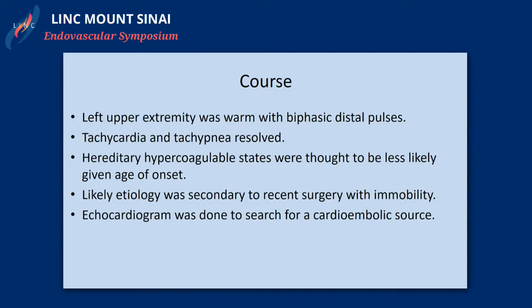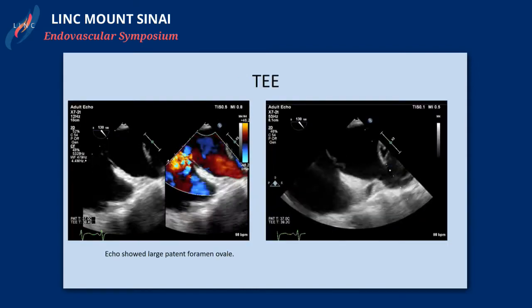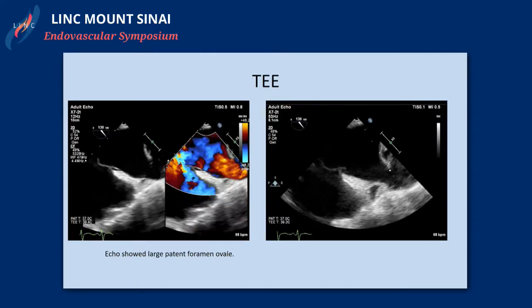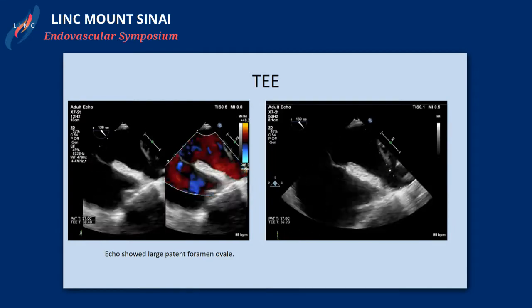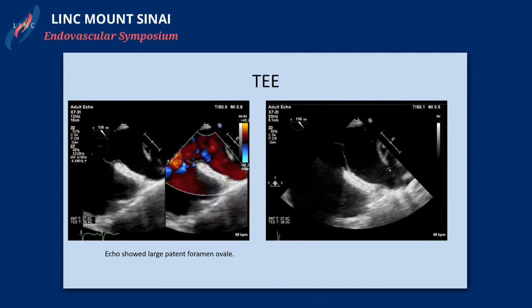The patient's arm was warm with good distal pulses, and tachycardia and tachypnea resolved. We did not think this was a hypercoagulable state given her age of onset, and felt the etiology was most related to her immobilization from surgery. An echo was done to look for a cardioembolic source because we couldn't explain why she would have both arterial and venous thrombosis.